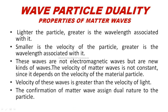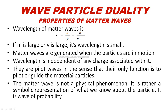The next topic is properties of matter waves. First property: lighter the particle, greater is the wavelength. Similarly, greater the velocity of the particle, smaller the wavelength. The matter wave formula is Lambda equals H by P, or H by MV. If M is large, Lambda is small. If V is large, Lambda is small.